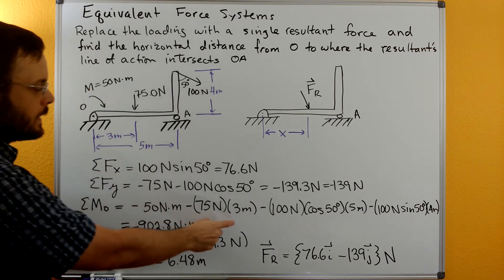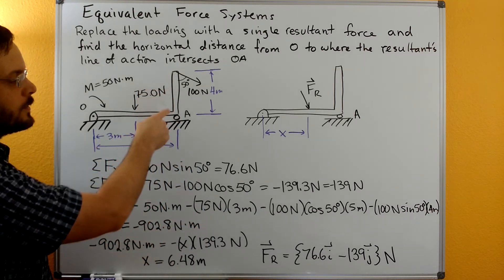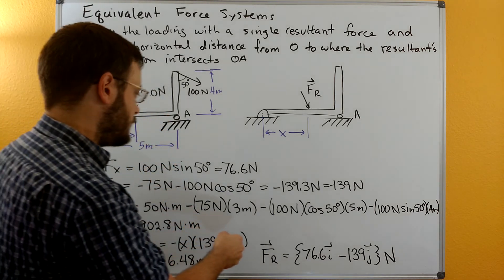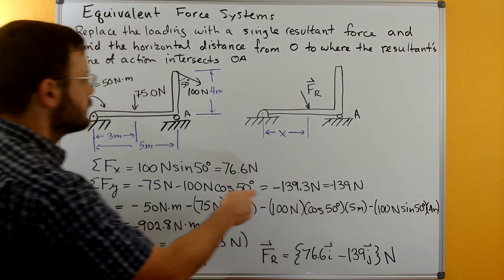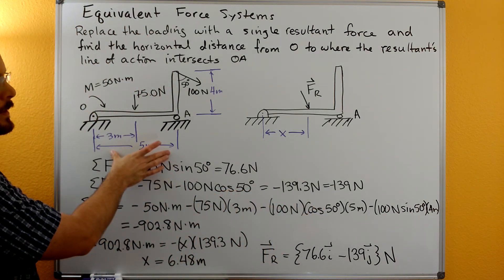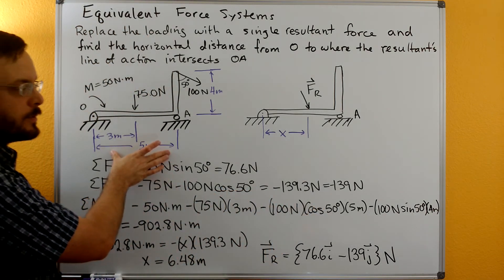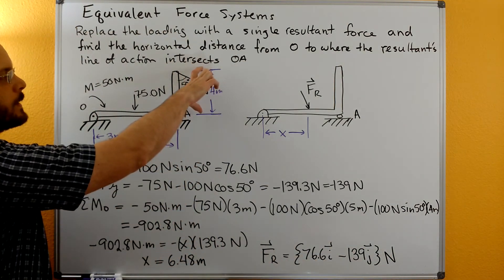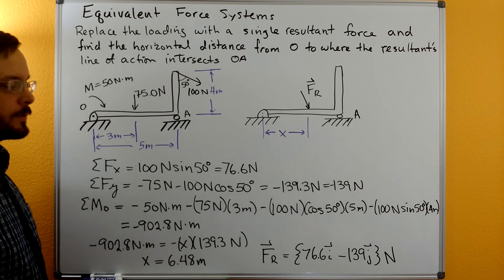And then we have the 100 Newton force that has both the X and the Y component. So for the Y component here, we're going to multiply that by this X distance of 5 meters. For this X component here, we're going to multiply it by its Y distance of 4 meters.